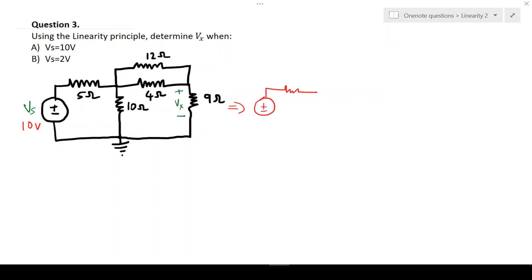So the circuit will then be simplified. That will be 10, 12 in parallel with a 4 should give you 3 ohms. So that will be 3, that's 9, that's 5, and that's 10 volts, which is our Vs.